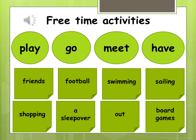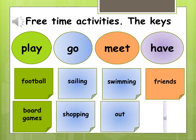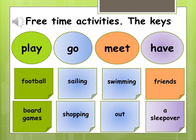Complete the following free time activities with the verbs play, go, have and meet. Check the meaning of all the activities. Here you can see the keys — the free time activities and their verbs are in the same colours. Play football, play board games. As you can see, we use 'play' with games. Go sailing, go shopping, go swimming, go out. We say 'go' with the -ing ending and in phrasal verbs, for example, go out. Meet friends and have a sleepover.